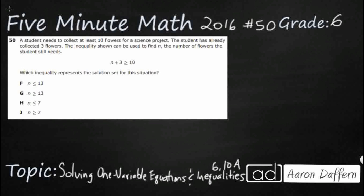So we have a student that needs to collect at least 10 flowers — and 'at least' is where we get our greater than or equal to. So it can be 10, it could also be more than 10, it just cannot be less than 10. The student has already collected three, so we have an inequality here to show n, the number of flowers the student still needs. We just need to find an inequality that represents the solution. It's an inequality, not an equal sign, simply because there's more than one solution.